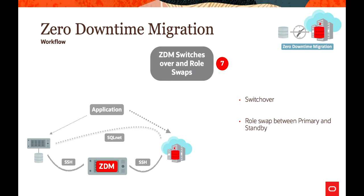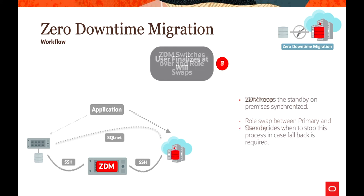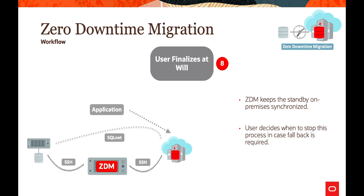Once synchronization of the target platform is complete, ZDM can perform the switchover and execute a role switch. A role swap happens between primary and standby, and then the switchover operation is done. Users validate that the migrated environment meets their needs and can finalize based on their decision. ZDM keeps the standby database synchronized both on-premises and in the cloud, and the user can decide whether to stop the process or fall back — the acceptance of migration is entirely up to the user.